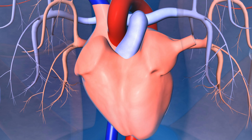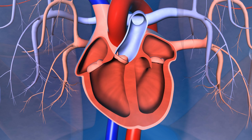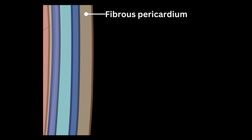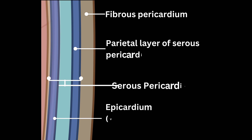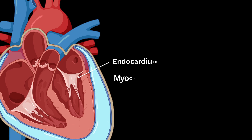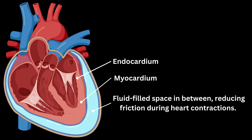The heart is enclosed within a protective double-layered membrane called the pericardium. The outer layer, the fibrous pericardium, provides structural support and prevents overstretching. The inner layer, the serous pericardium, consists of the parietal and visceral layers, with a fluid-filled space in between, reducing friction during heart contractions.